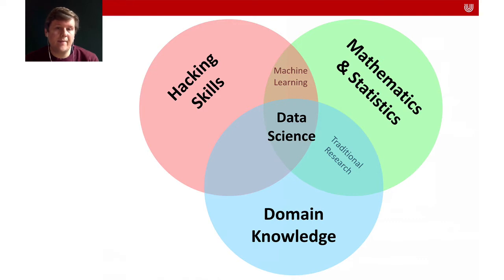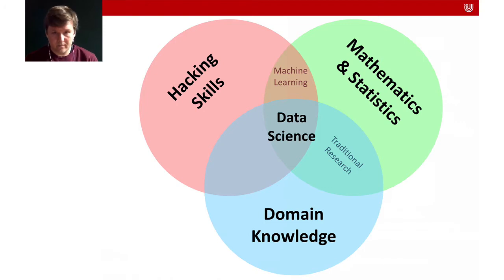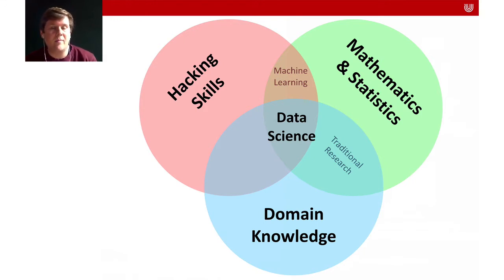I would like to start this lecture with this schematic of what data science is. In this Venn diagram we have three big blocks: Mathematics and Statistics, Domain Knowledge, and Hacking Skills. The combination of Mathematics and Statistics and Domain Knowledge about a particular field — like Biology or Sociology — is what's usually happening in traditional research. The combination of Hacking Skills, Technical Skills, and Mathematics and Statistics is what's commonly happening in Machine Learning. In this Data Science course, the idea is to combine the three.